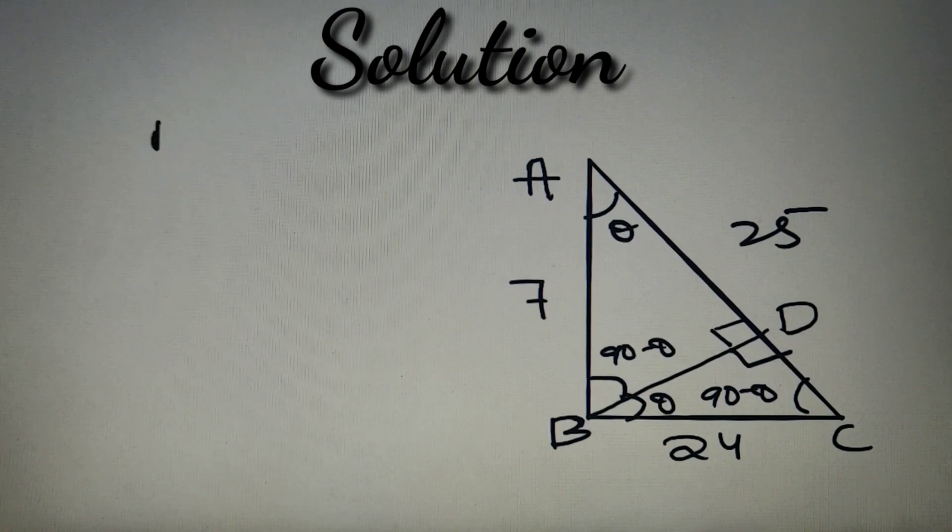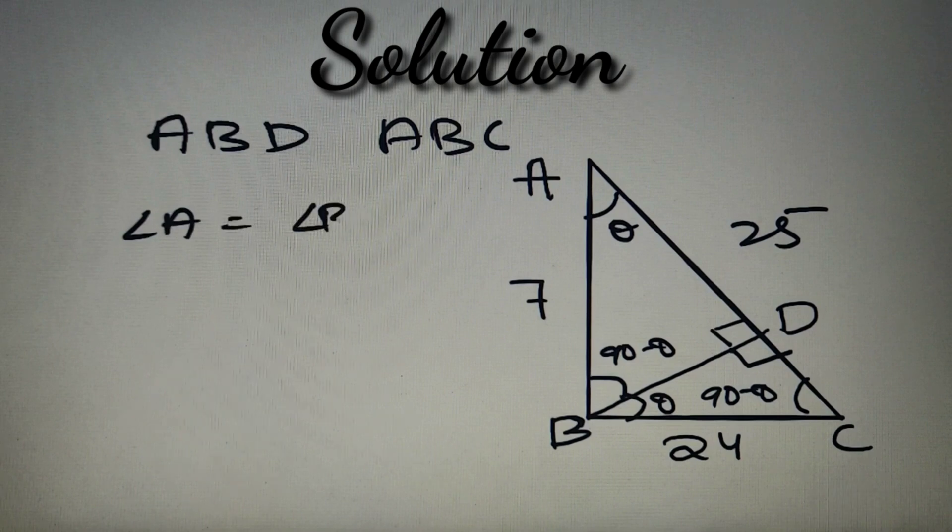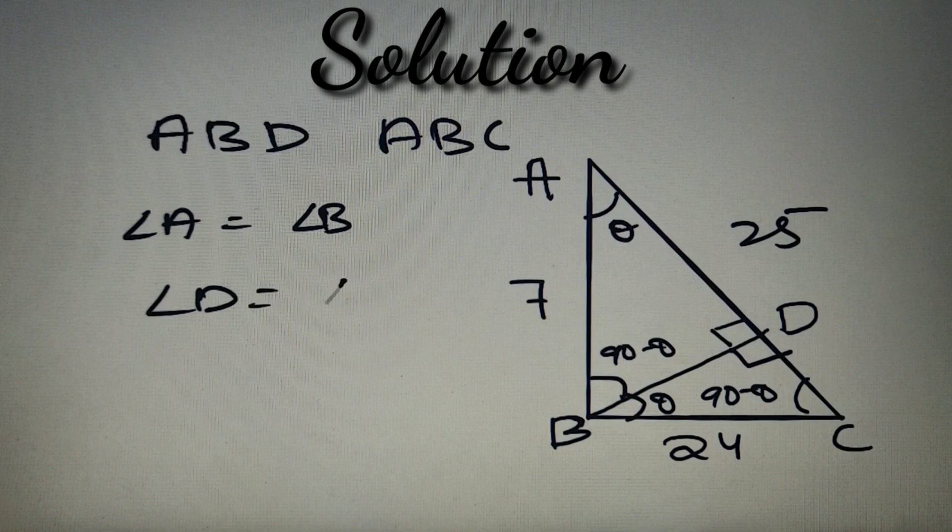We have got all the angles for this triangle. Now let's use the property of similarity. We have to prove triangle ABD and triangle ABC as similar. We have got angle A equals angle B because both equal theta, and we have got angle D equals angle B because both are 90 degrees.